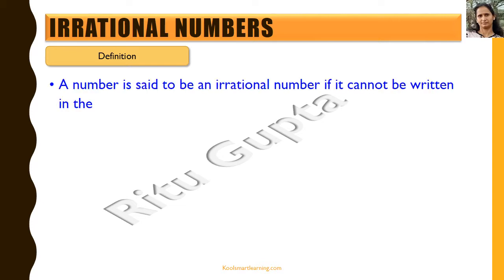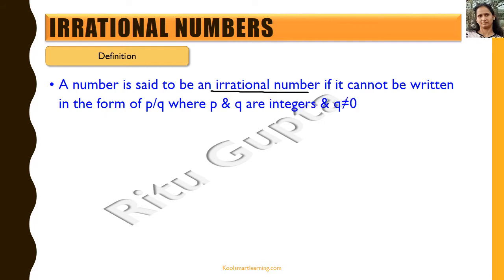Any number is said to be an irrational number if it cannot be written in the form of p by q, where p and q are integers and q is not equal to 0. This is just the opposite of the definition of rational numbers, which says any number which can be written in the form of p by q, where p and q are integers and q is not equal to 0, is a rational number.